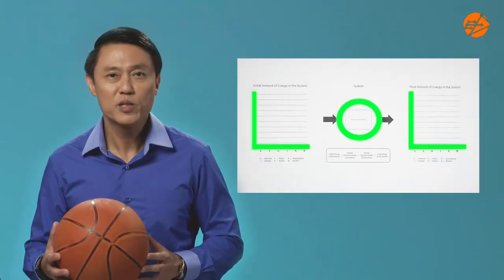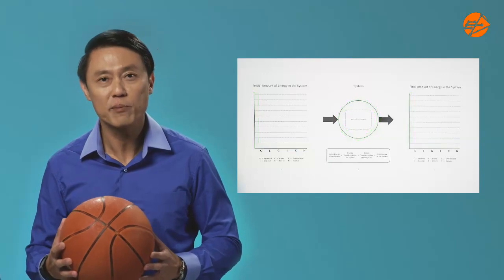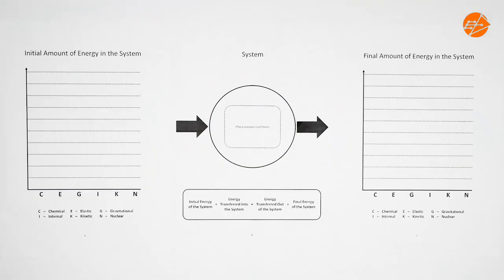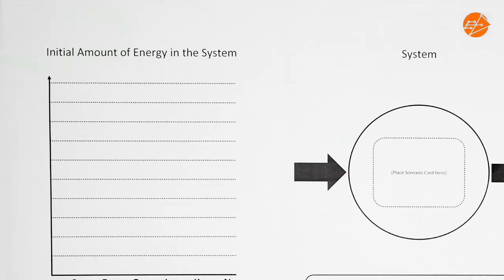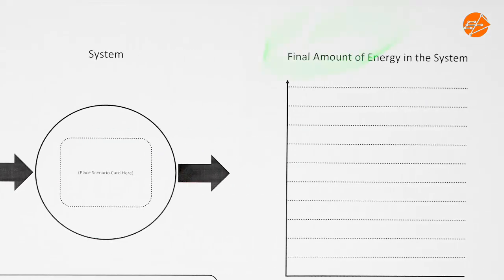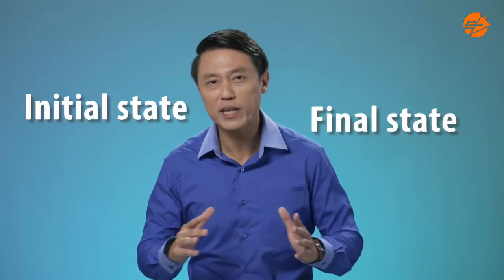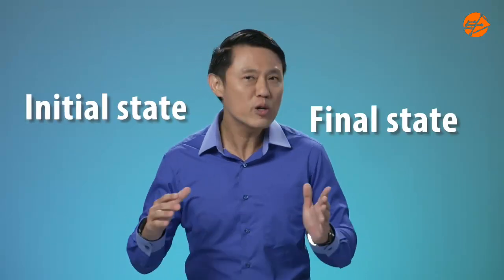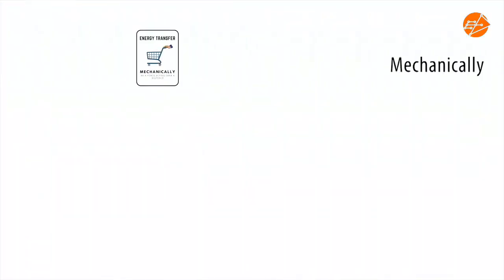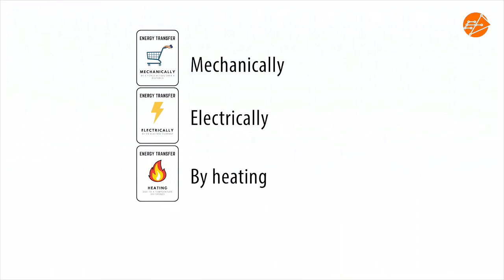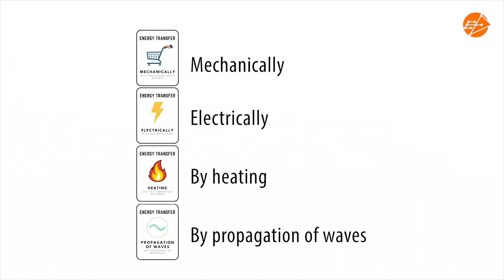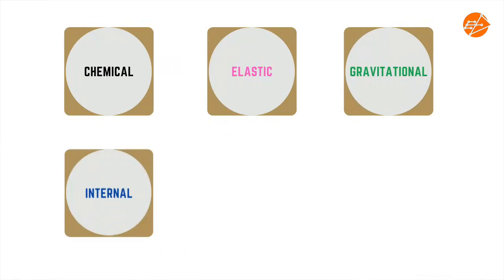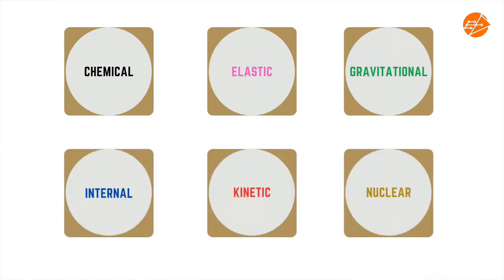In this video, we are going to use LOL diagrams to do an energy analysis of an event involving a basketball. In particular, we will look at the issue of defining initial and final states. Whenever we describe an event, there is always a choice of initial and final states, and our choice affects the story we tell in terms of which energy transfers took place and which stores are filled before and after the event.